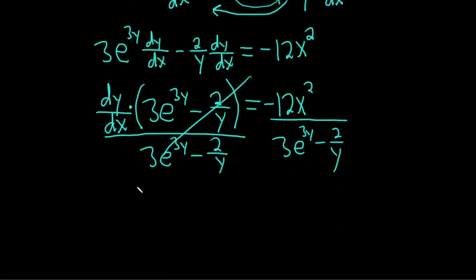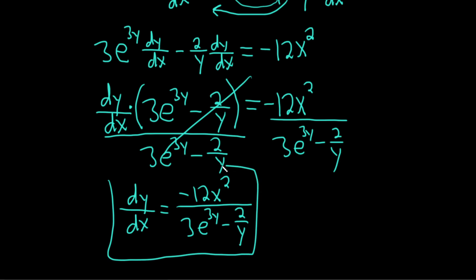It goes away, and we're left with everything we have on the right-hand side. So dy/dx is equal to negative 12x squared over 3e to the 3y minus 2 over y. That's the derivative of y with respect to x. Good luck.